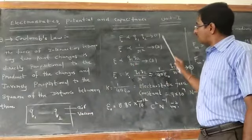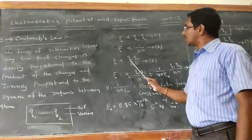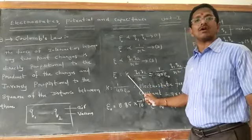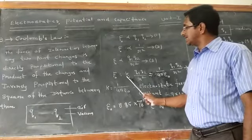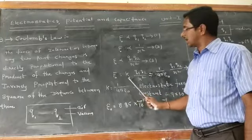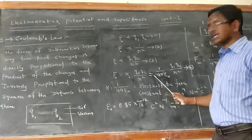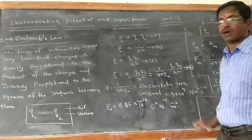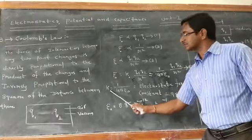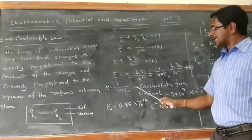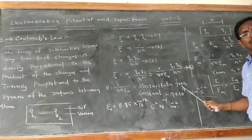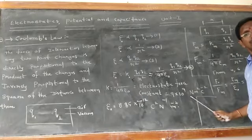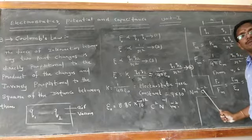From equations 1 and 2, F is directly proportional to Q1·Q2 / R². To remove the proportionality we introduce a proportionality constant K₀. Therefore F = K₀ × Q1·Q2 / R². That K₀ equals 1 / (4πε₀), so F = (1 / 4πε₀) × Q1·Q2 / R². K₀ is called the electrostatic force constant, and its value is 9 × 10⁹ N·m²·C⁻².